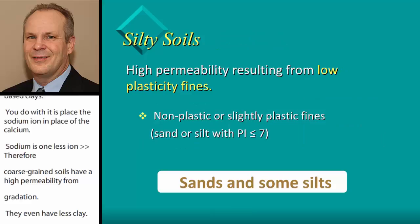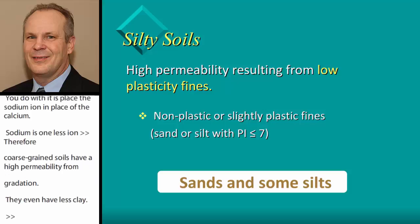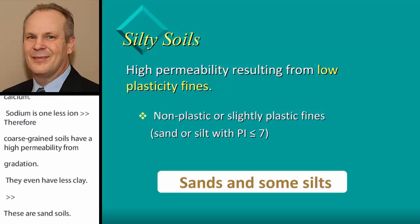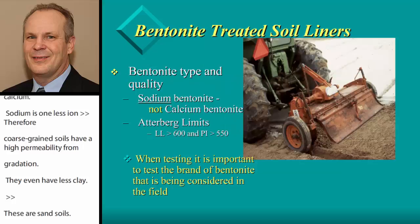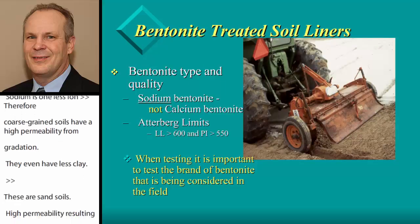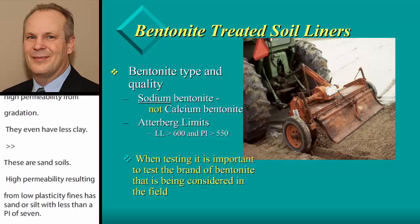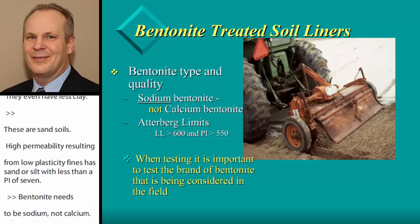High permeability can also come from low plastic fines — non-plastic or slightly plastic fines. Sands and silts are less than a PI of 7. For bentonite, you need to use sodium bentonite, not calcium bentonite. The Atterberg limits on sodium bentonite have liquid limits as high as 600 and a plasticity index of about 550.